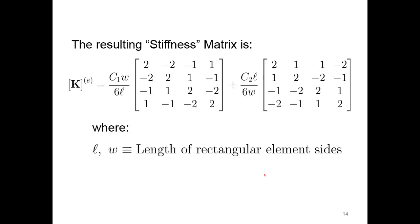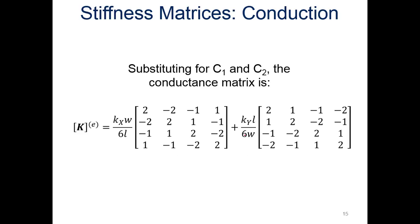The resulting stiffness matrix from the Galerkin approach is: the overall stiffness matrix for conduction equals C1 times the width over 6L with the corresponding matrix values, plus C2 times L over 6W with those values — where L and W are the length and width of the rectangular element. Substituting back in for C1 and C2, we get the conduction in the X direction times the width divided by 6 times the length, and the conduction in the Y direction times the length divided by 6 times the width. For any element with conduction, we use this equation to analyze heat transfer through it.